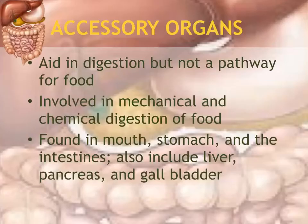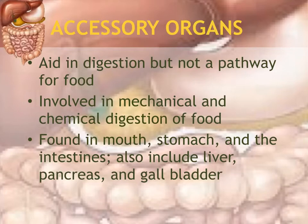Accessory organs are organs that the food does not actually pass through, but they aid in digestion in some way. They can be involved in mechanical and chemical digestion of the food, and they may produce certain types of fluids or secretions that aid in digestion.